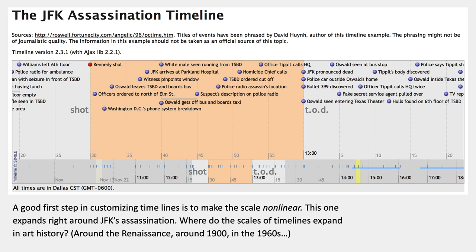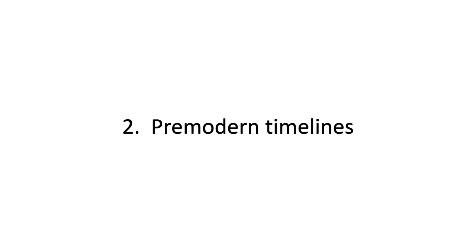Art historians think of time as expanded, moving more slowly, or more fine-grained in certain periods than others. So time is not linear in art history — in professional art history, in the teaching of art history, it's not linear and certainly not linear in anyone's imagination. Most of this lecture is about ways to come up with timelines that could more accurately match your imagination of art history or the way it's taught.